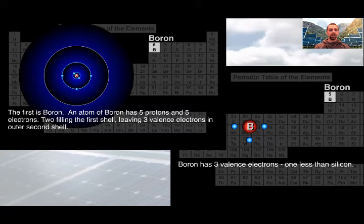As you see here, the first is the boron. It has five protons and five electrons. Two of its electrons filling the first shell, leaving three valence electrons in the outer second shell. So, boron has one less valence electron than silicon.